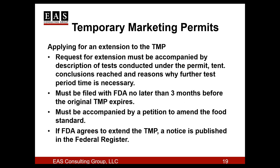If a firm is selling this new version of the standardized food but decides they need a little more time to decide what they want to do, they can apply to FDA for an extension of the temporary marketing permit. The request to extend must be filed with FDA no later than three months before the original TMP expiration date, because that gives FDA time to review and consider the extension request and ensure there won't be any time that test products are considered violative and out in the market.